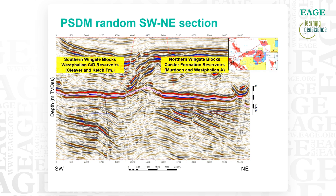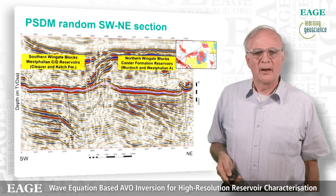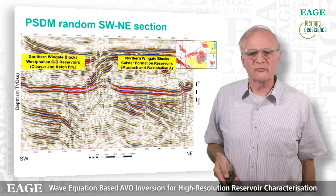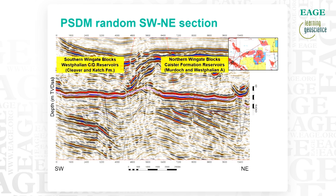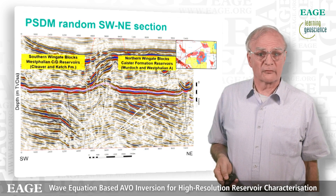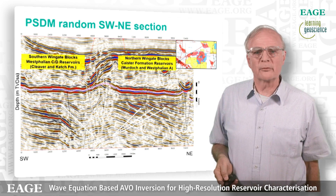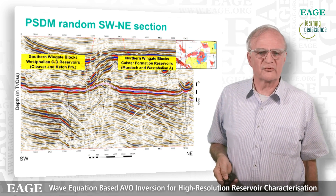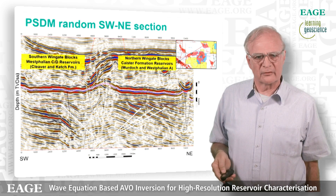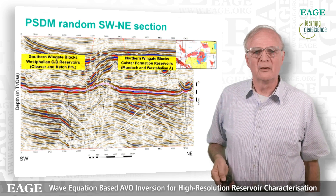This is the data — the P-wave stack, not the input to the inversion. You see the base very weakly below the bright event: the base unconformity with some amplitudes highlighted by the arrows. You see some possible amplitude anomalies; it's not very clear whether they are anomalies or not because they don't stand out, and this is clearly a reflectivity-based, acoustic impedance-based display.